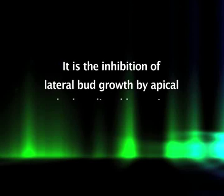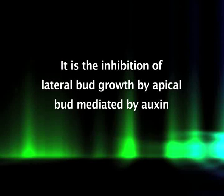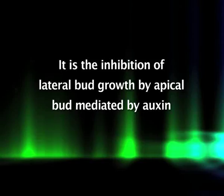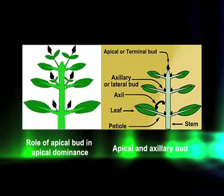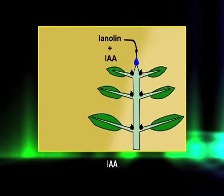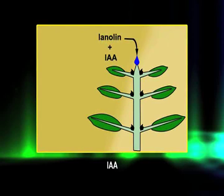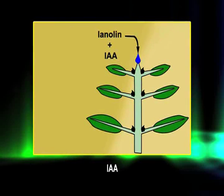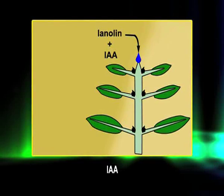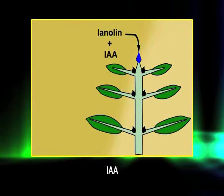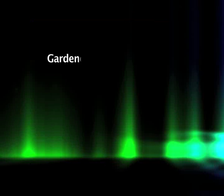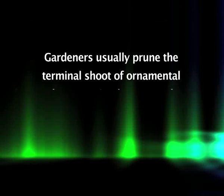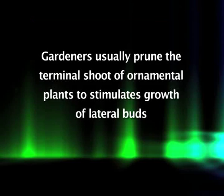The growing apical bud inhibits the growth of lateral or axillary buds in most higher plants — a phenomenon known as apical dominance, which is mediated by auxin. Removal of the apical bud in Phaseolus vulgaris was found to release the axillary buds from apical dominance. Application of auxin in lanolin paste to the cut surface of a decapitated stem could prevent the growth of axillary buds, confirming that auxin produced in the apical bud and transported basipetally inhibits lateral buds. Gardeners often prune terminal shoots of ornamental plants to release lateral buds from apical dominance.